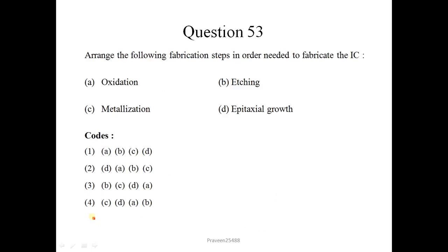Next question is arrange the following fabrication steps in order needed to fabricate the IC. First we go for epitaxial growth, then oxidation, then we go for etching, and last we do metallization. So there is a sequence DABC. DABC option 2 is the correct option.